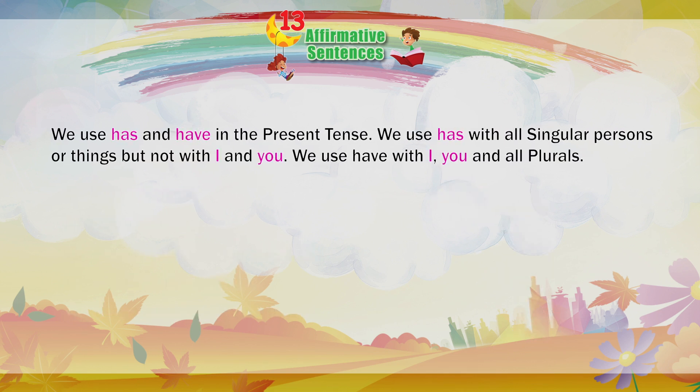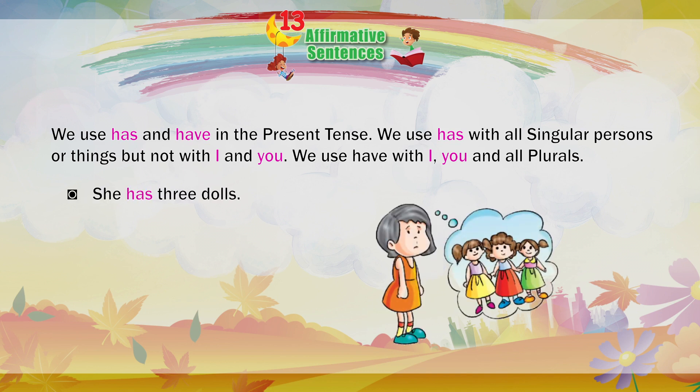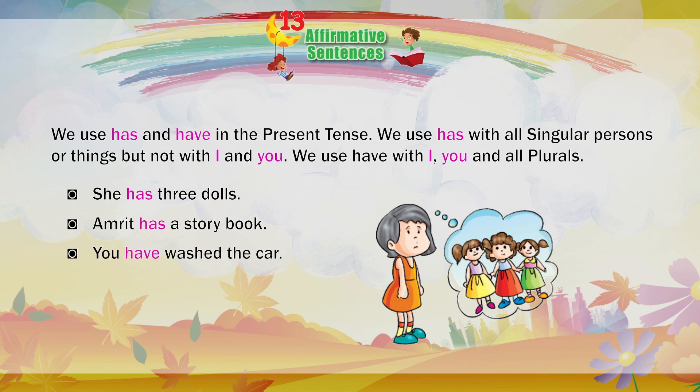We use 'has' and 'have' in the present tense. We use 'has' with all singular persons or things, but not with 'I' and 'you'. We use 'have' with 'I', 'you', and all plurals. She has three dolls. Amrit has a story book. You have washed the car. We have bought five toys.